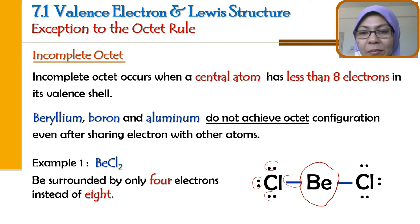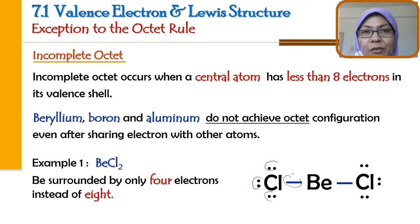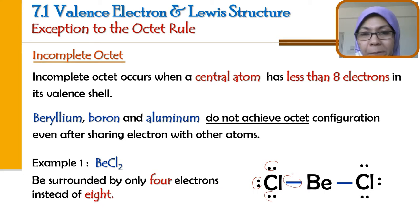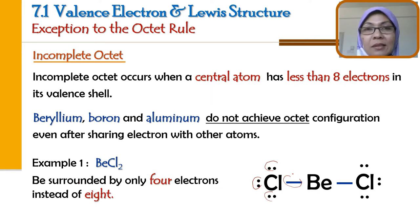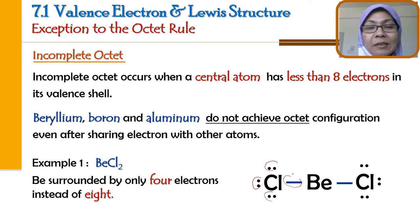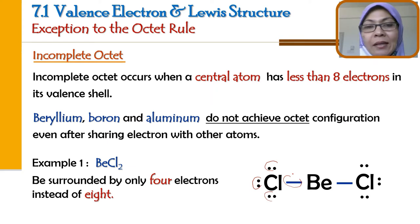Center atom beryllium ini hanya ada 4 saja instead of 8. Jika berlaku keadaan di mana tidak cukup 8 — kenapa dia tidak cukupkan 8? Kerana dia tidak perlu cukupkan 8, dia telah stabil. Dia adalah satu pengecualian kepada hukum octet yang berlaku untuk certain molecules. Ini satu contoh: BeCl2. BeCl2 menunjukkan incomplete octet kerana atom yang di tengah, beryllium, mempunyai 4 elektron saja instead of 8.